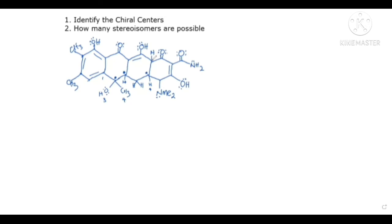Coming up here: we have a hydrogen as one group, a carbon with OH as two, the double bond as three, and the CH as four. This carbon has four different groups attached to it, so this is a chiral center.